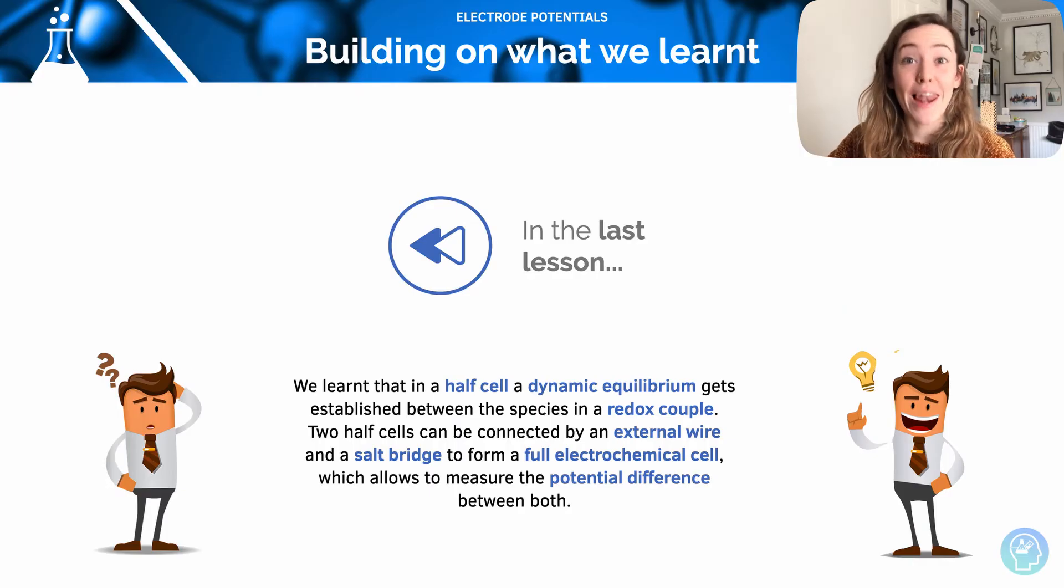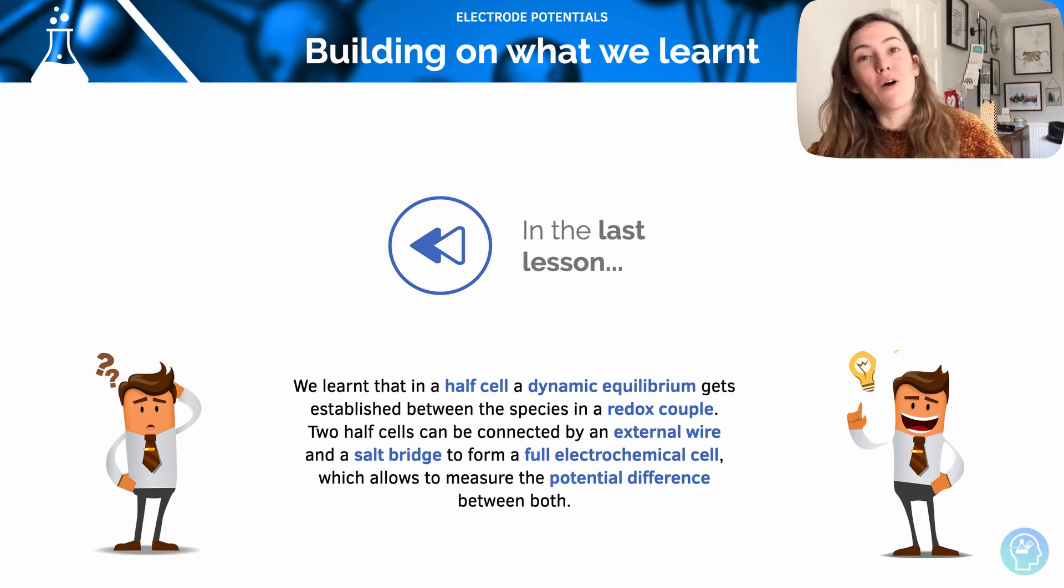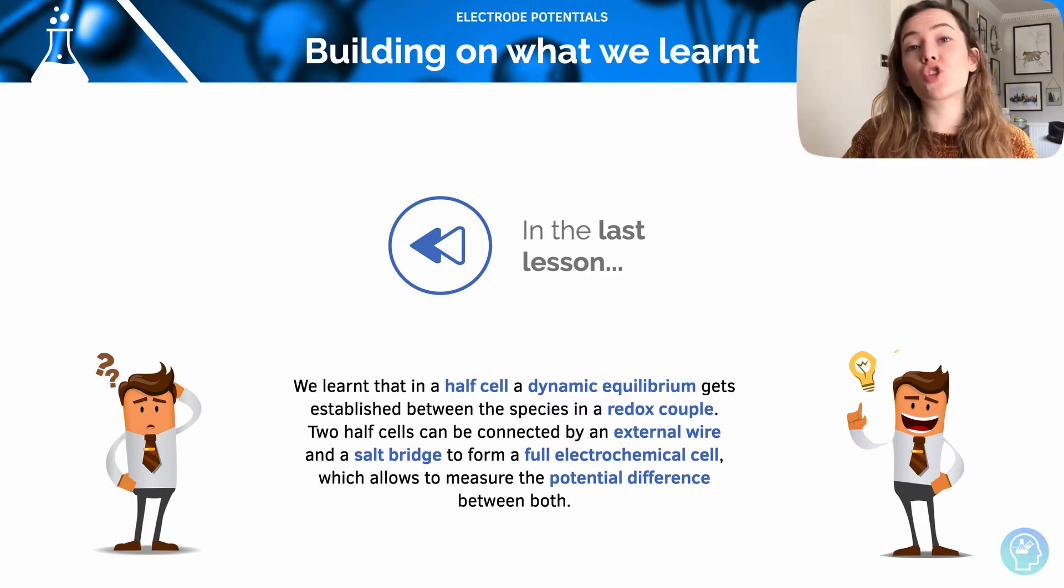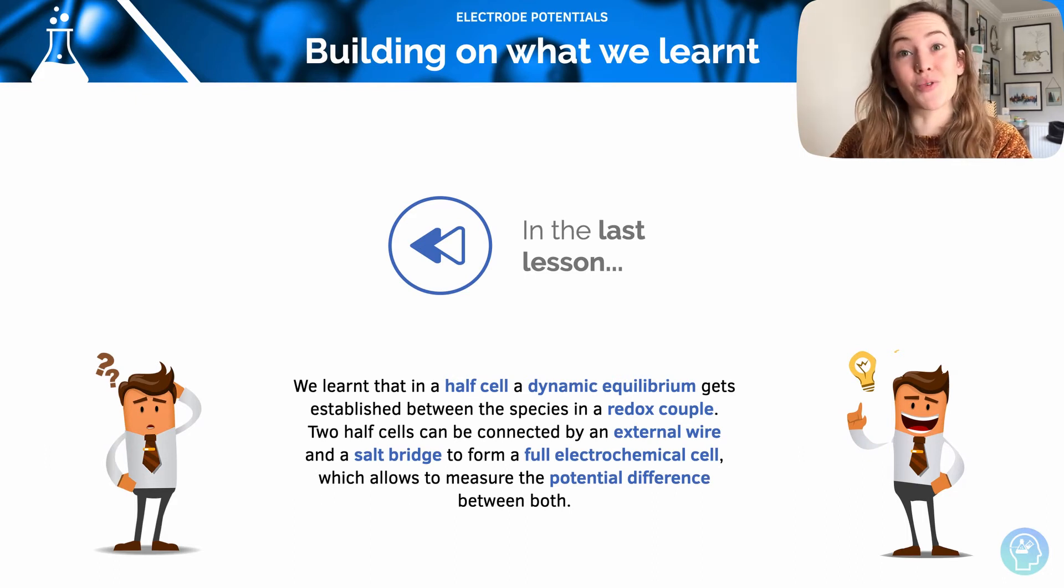Hi and welcome to this lesson on electropotentials. In the last lesson we looked at half-cells, learned about dynamic equilibrium, and about redox systems and redox couples. We learned that two half-cells can be connected together to make a full electrochemical cell using an external wire and a salt bridge. In this session we're going to look at electropotentials, how we can work those out, and calculations involving those.